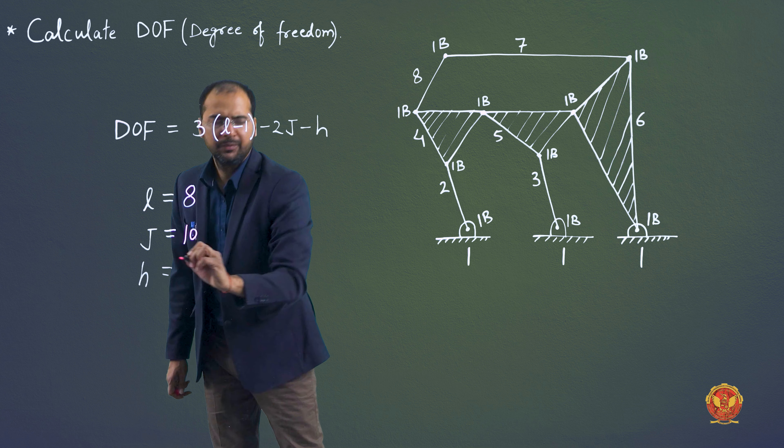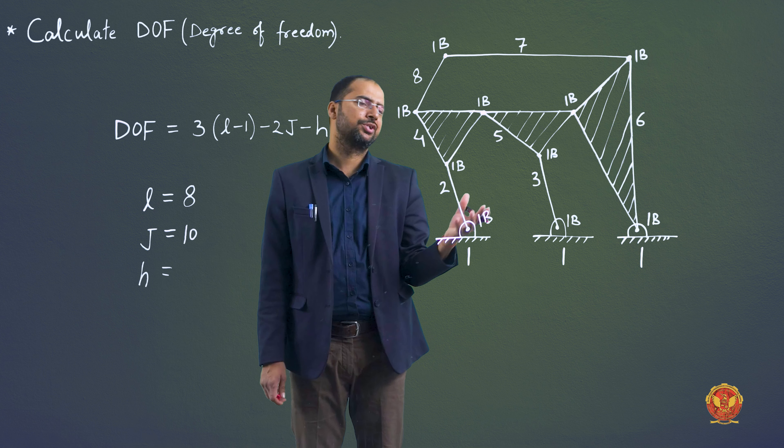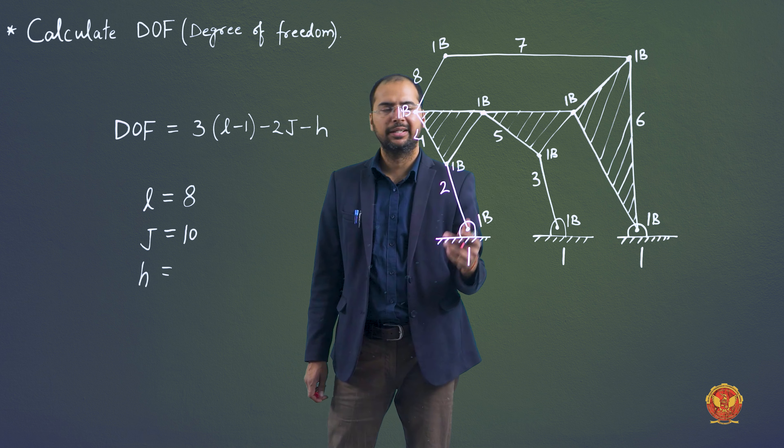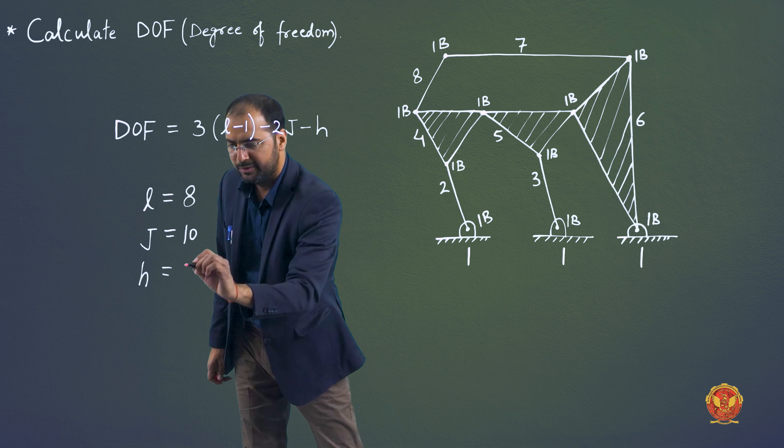Number of higher pairs: here there is no link between line contact or point contact, so higher pairs is 0.